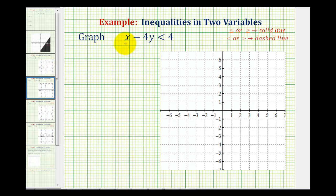We want to graph the linear inequality x minus 4y is less than 4. The graph of this is going to consist of a half plane that contains all the points with ordered pairs that would satisfy this inequality.